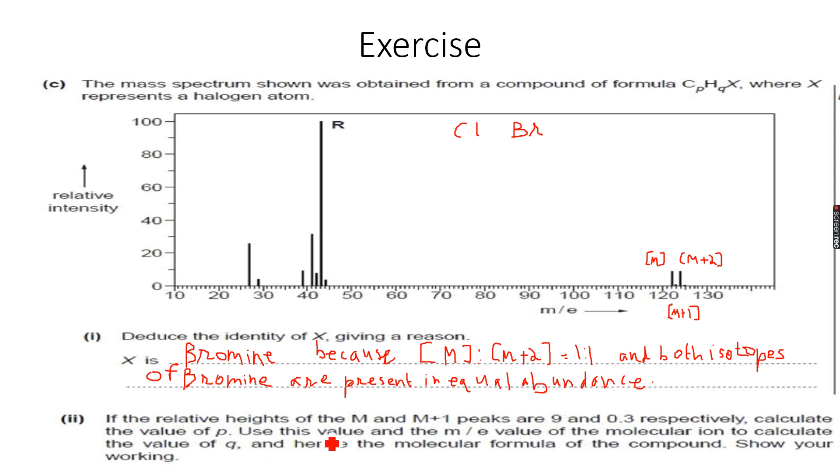If the relative heights of the M and M+1 peaks are 9 and 0.3 respectively, calculate the value of p. Let me just analyze this part of the question and solve it.